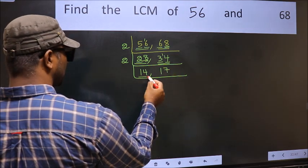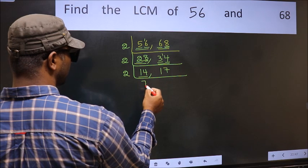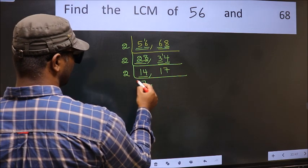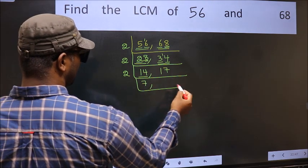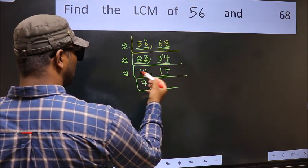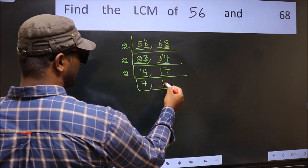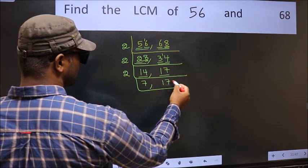Now here we have 14; 2×7=14. The other number is 17, which is not divisible by 2, so we write it down as it is.